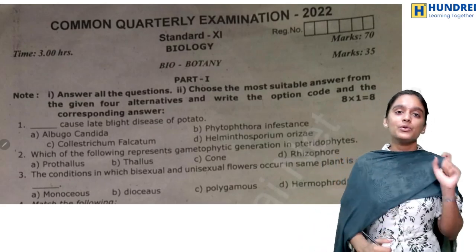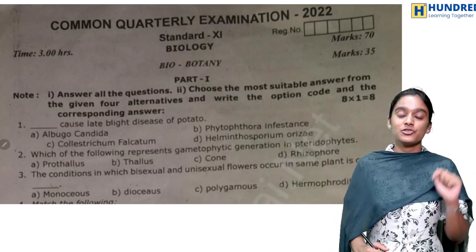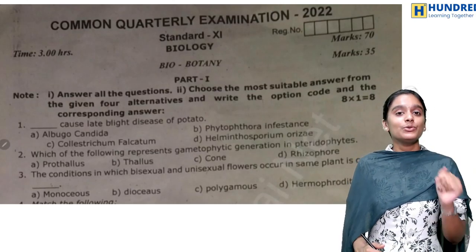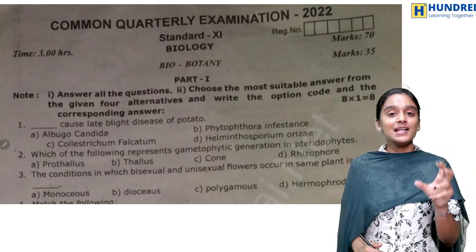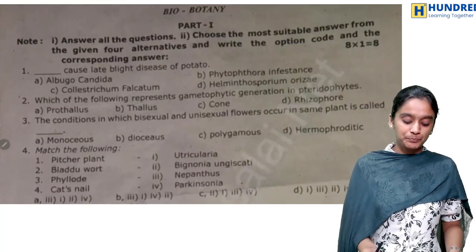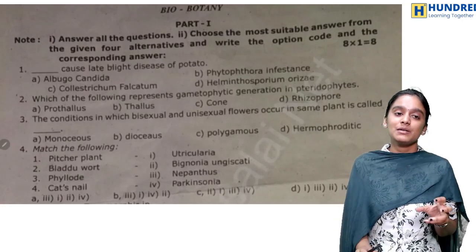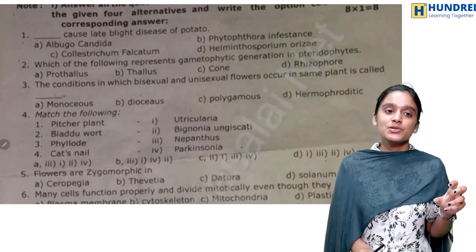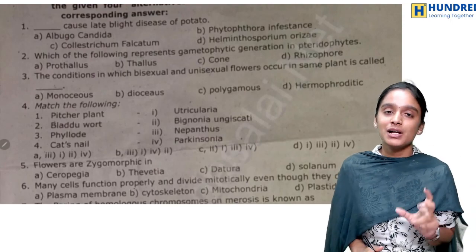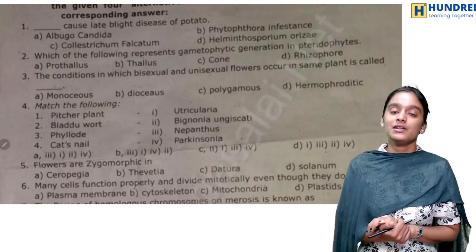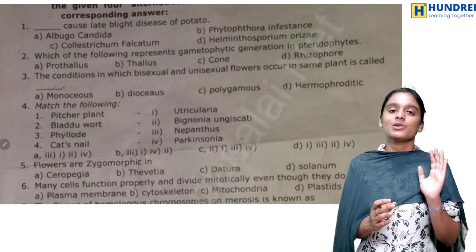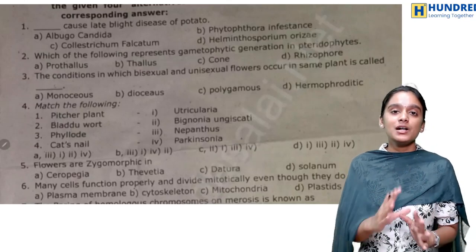That's why we can do a comment card analysis for 2022. If you can solve this and expect any difficult questions, we can see all questions in this question paper. For Bio-Botany Part 1, you can check 8 one-mark questions and we have 8 chapters — you can check one mark each.